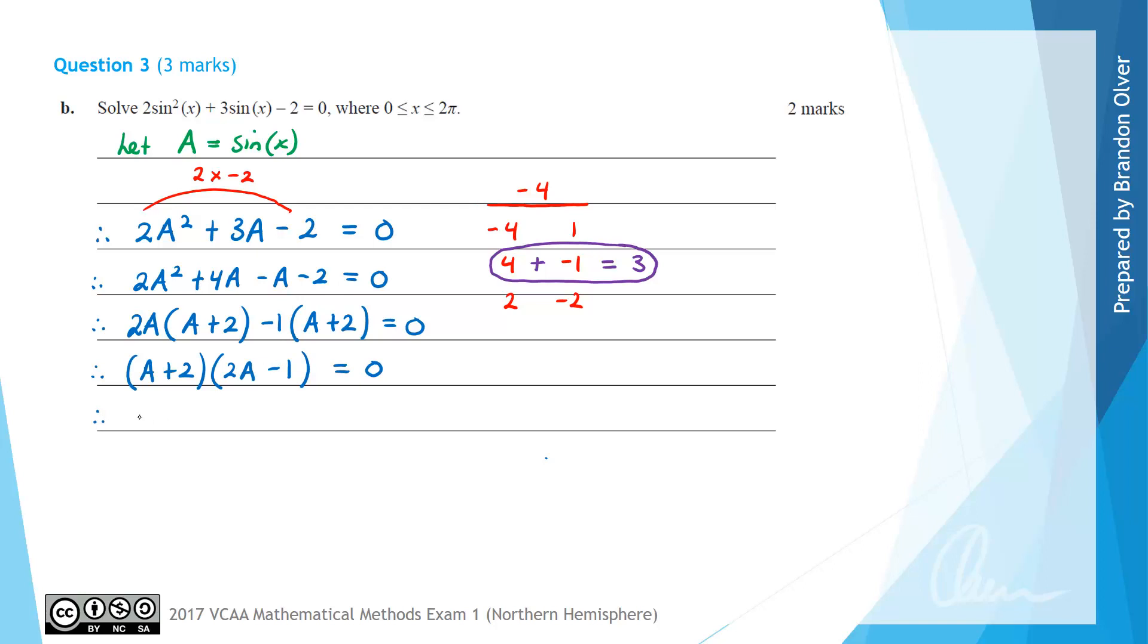So therefore, the null factor law would tell us that A + 2 could equal 0, or we would find that 2A - 1 could equal 0. However, we know what A is. A was just sin(x), so we have the equation sin(x) could equal -2, or sin(x), for the second equation, could equal positive 1/2.